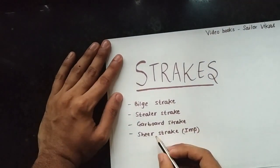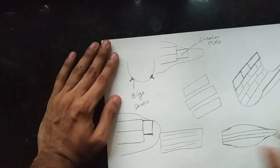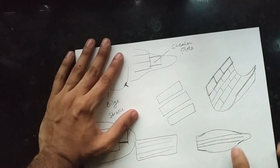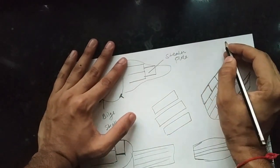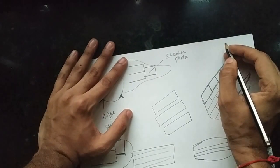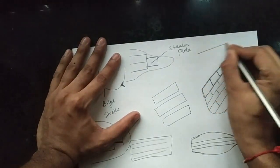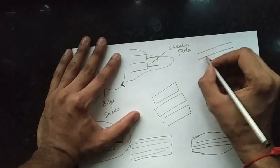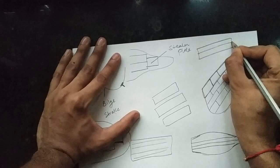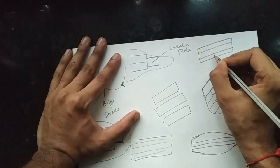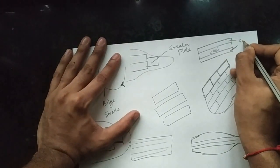What is a garboard strake? As we all know, the first thing laid for ship construction is the keel — that is the first plate of a ship. After the keel, the plates which are adjacent to the keel on both sides are known as the garboard strake.